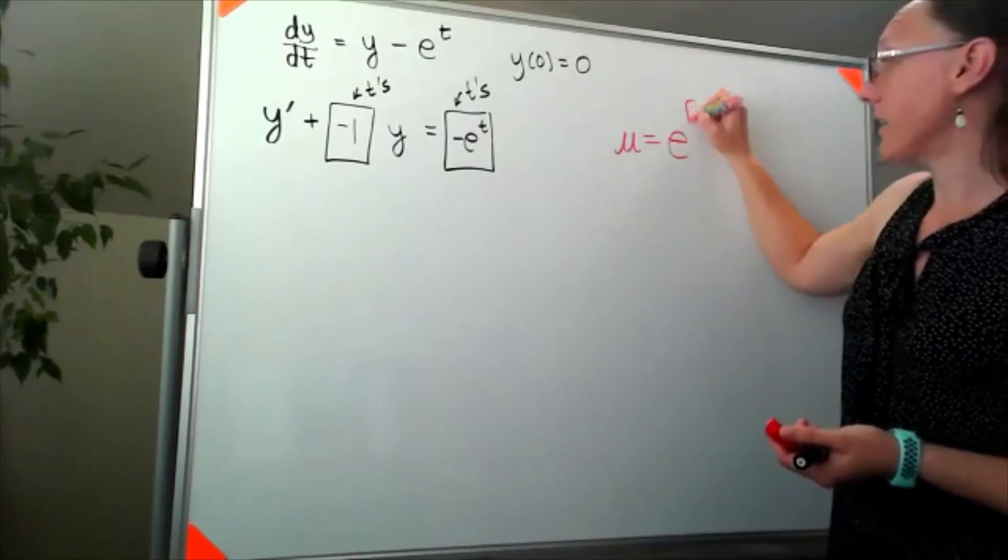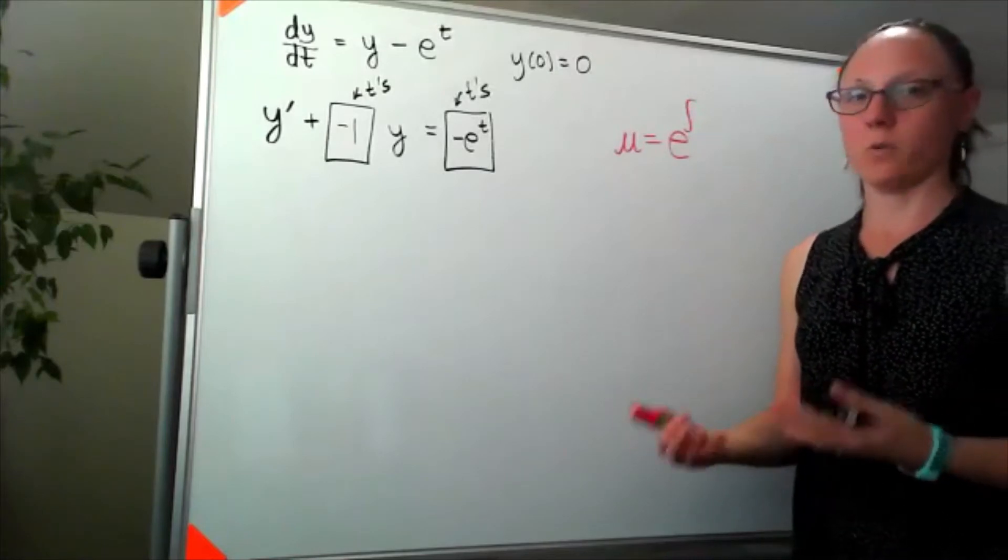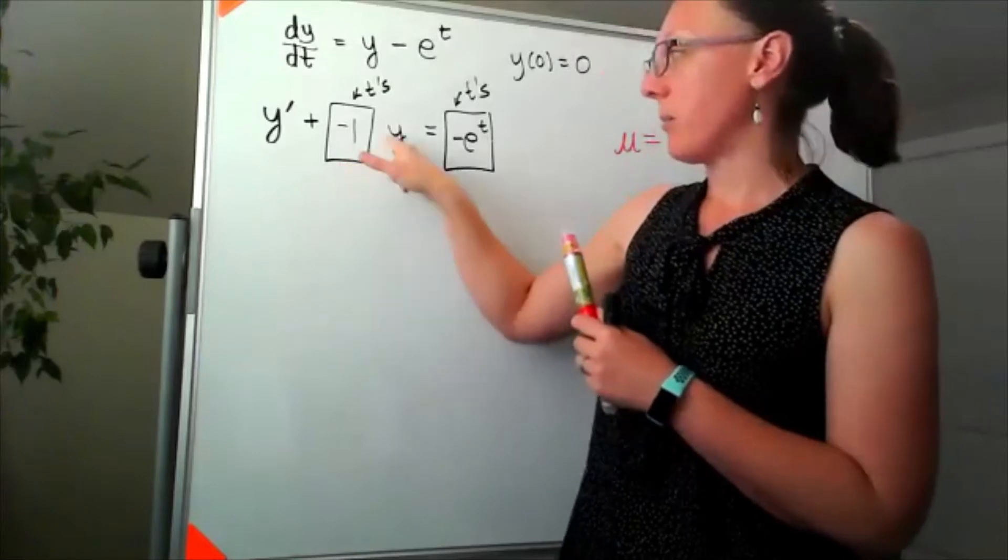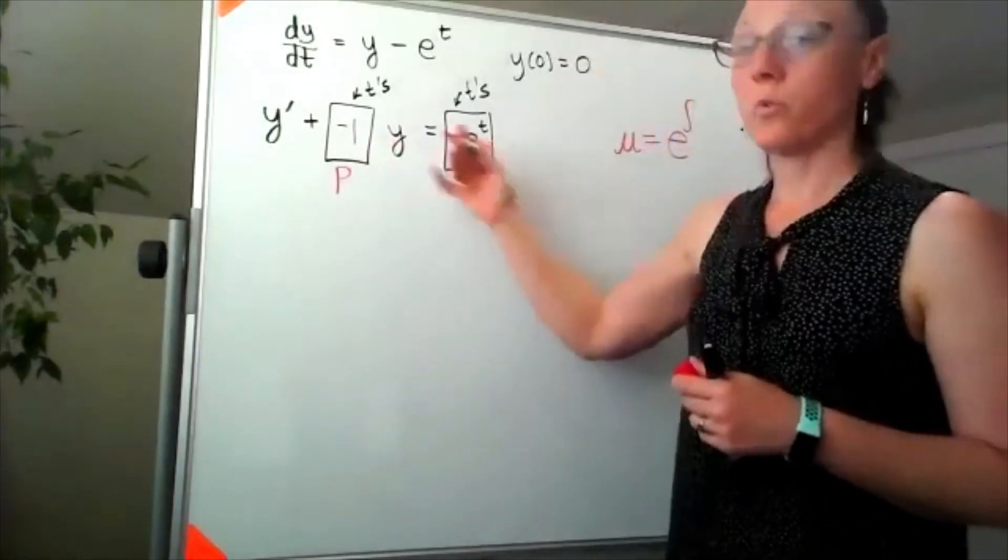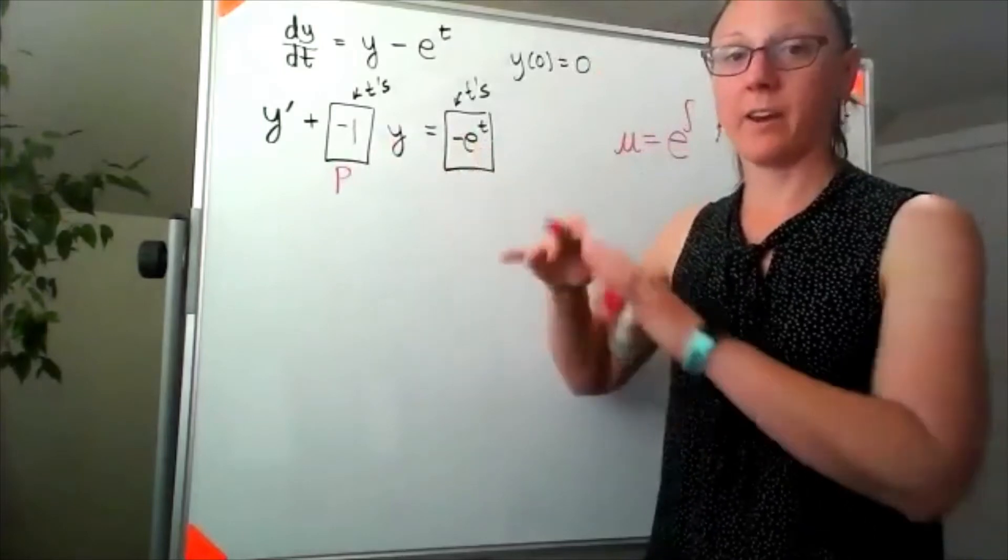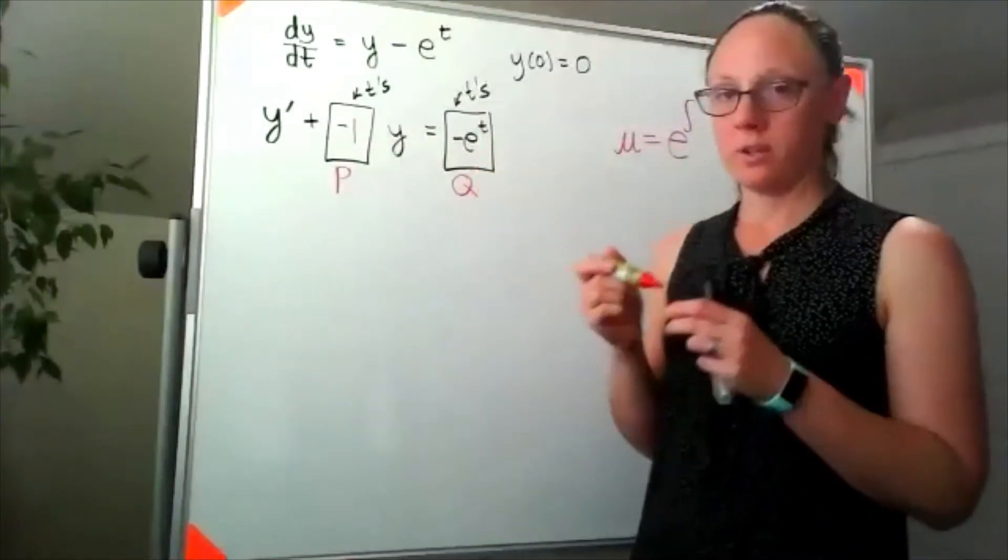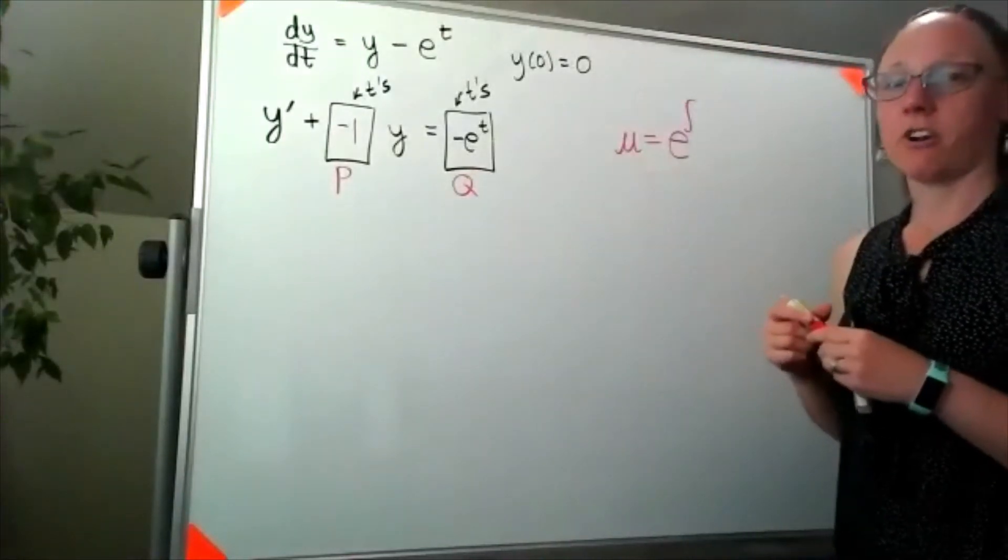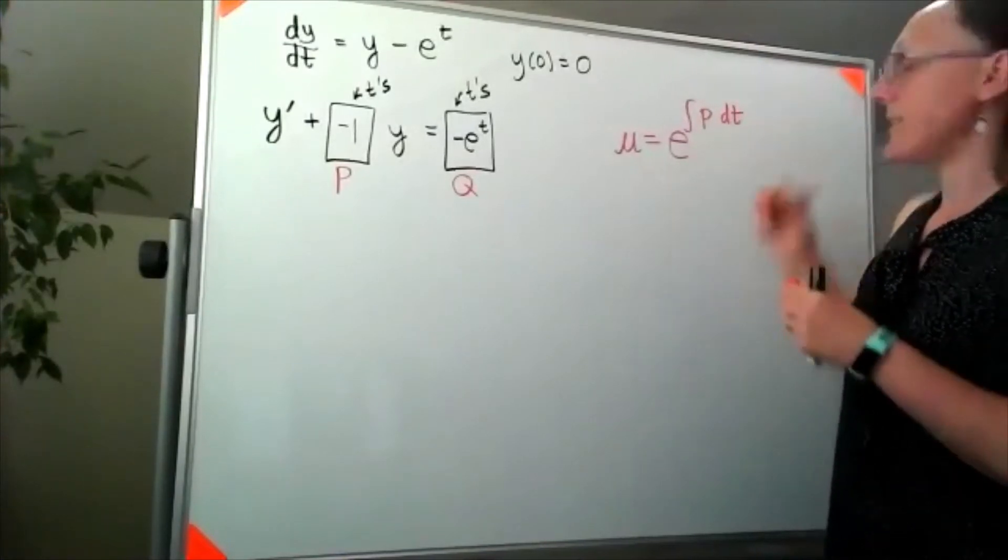So we're going to find our integrating factor by writing e to the integral of—now here's something we need to know notation-wise about our standard form. Whatever is here being multiplied by the y, we call that p. Whatever is over here on the other side of the equal sign once we have put it in standard form is q. So we're going to find our integrating factor by e to the integral of p dt.